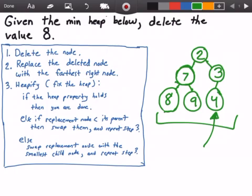So that sounds like a handful but it's really not that bad. Let's go ahead and erase this and start deleting the node that contains the value 8.